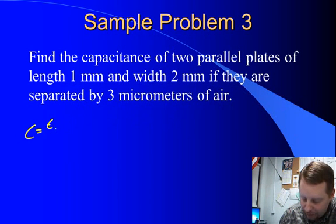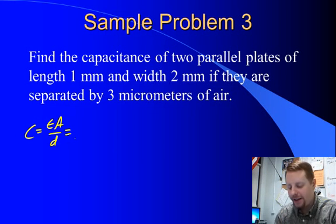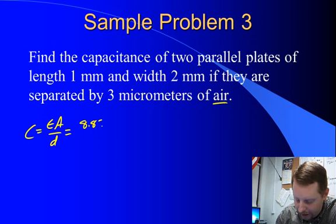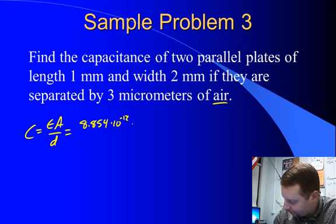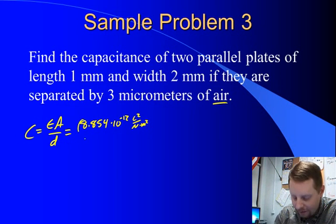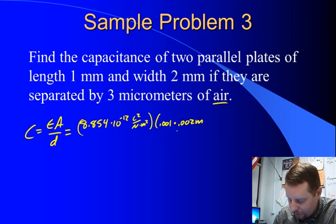Well, capacitance is epsilon A over d. Our epsilon in this case, since it's separated by air, will be epsilon zero, or 8.854 times 10 to the minus 12, coulombs squared per newton meter squared, which is also a farad per meter, times our area, 0.001 meter, 1 millimeter, times 0.002 meters, 2 millimeters.